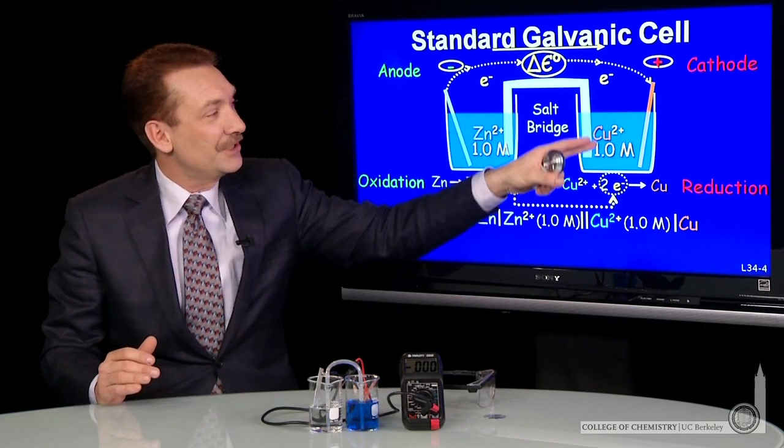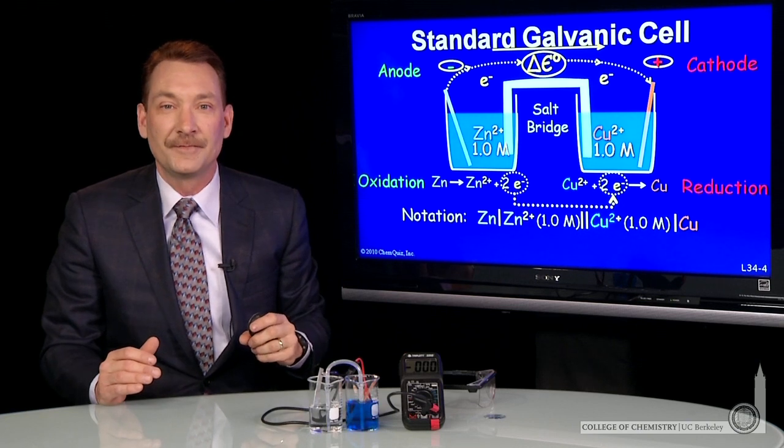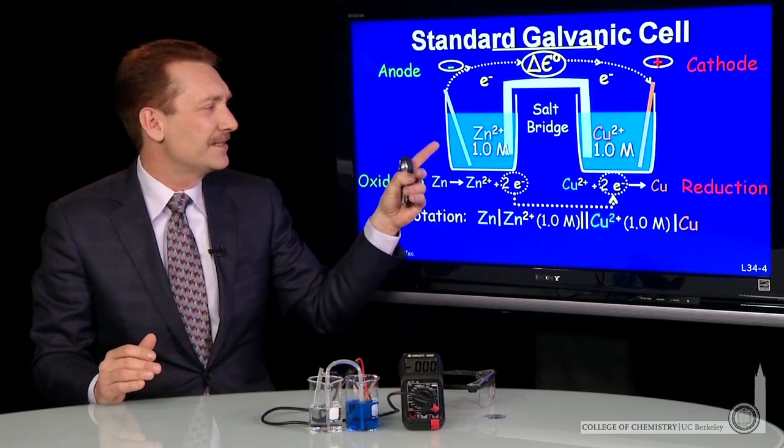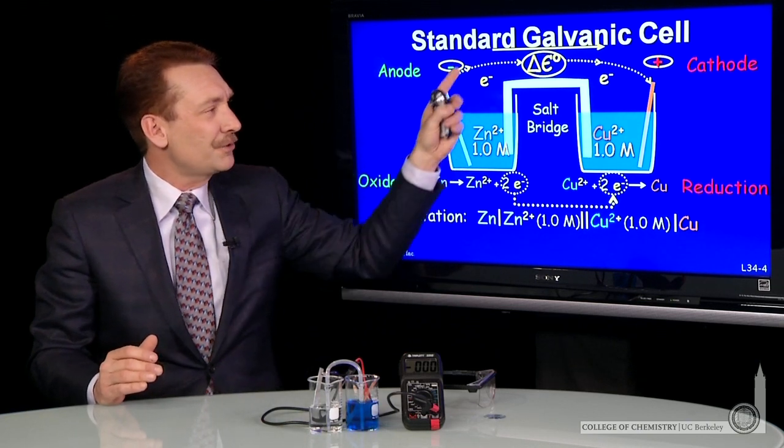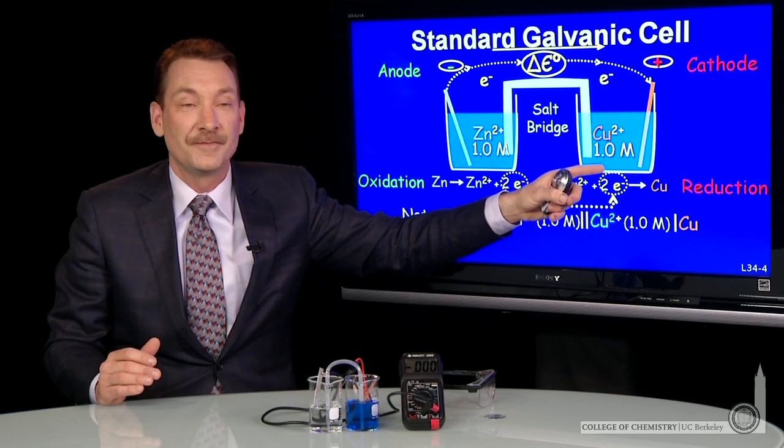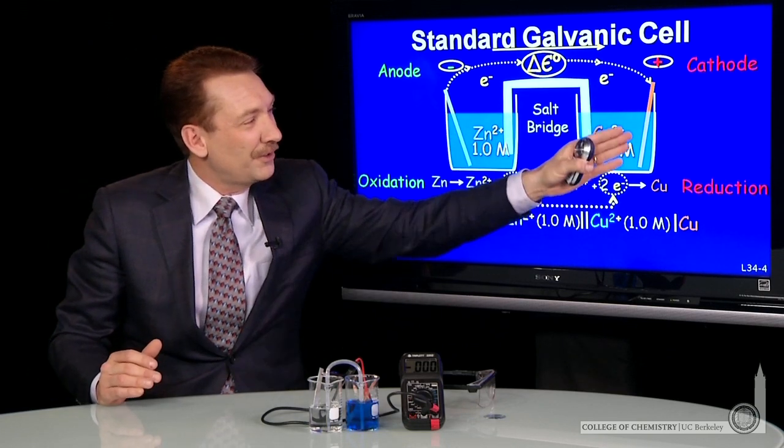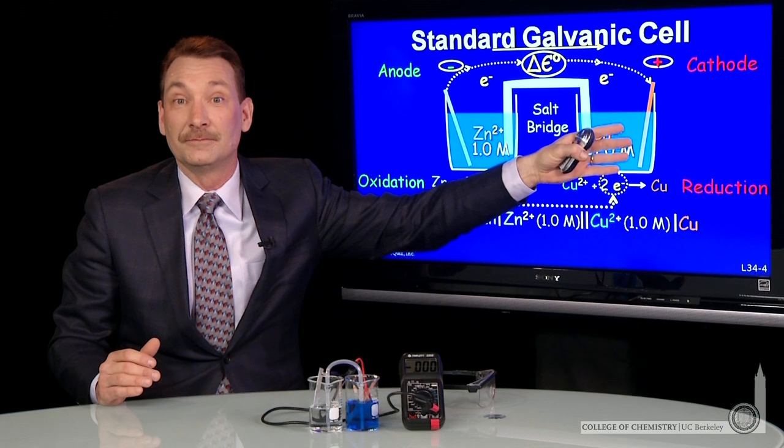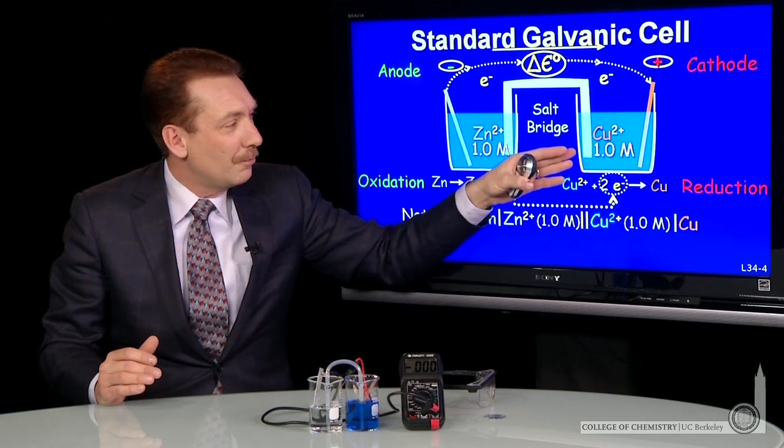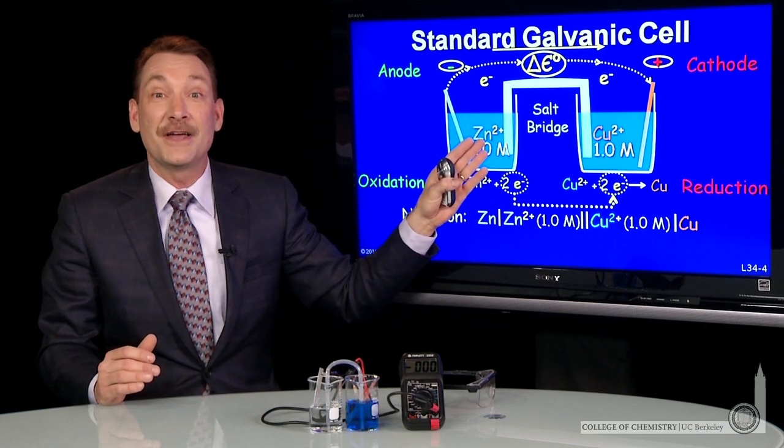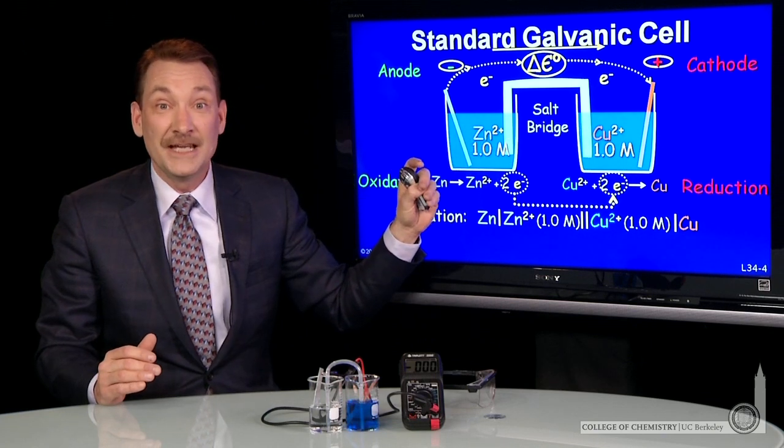Now there's a double bar here. That's another connection, and what this connection is is a salt bridge. Now we need the salt bridge. And why is that? If we want the electrons to continue to flow, that continued flow would cause charge to build up on one side. What the salt bridge does is allow that charge difference to be equalized.